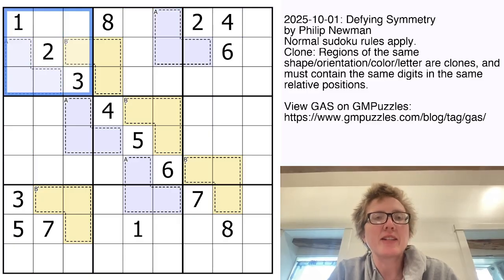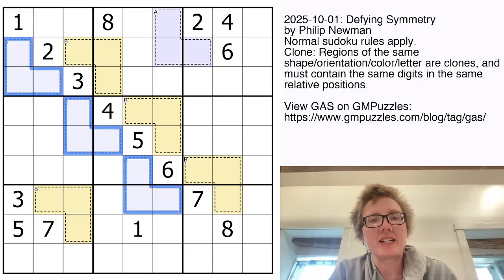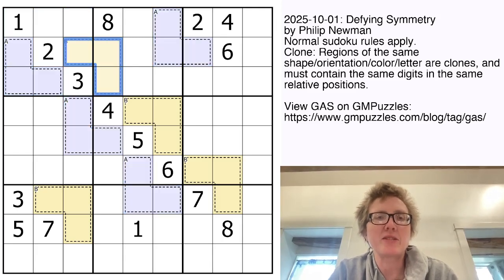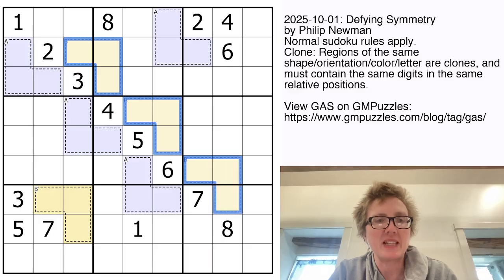And in addition to that, there are two sets of marked cages that are identical in the grid. So these ones are all marked A and they're blue. These ones are all marked B and they are yellow.